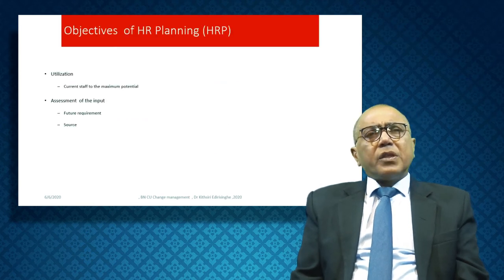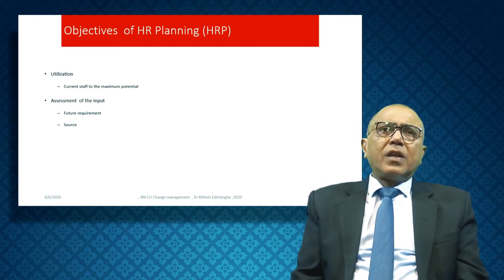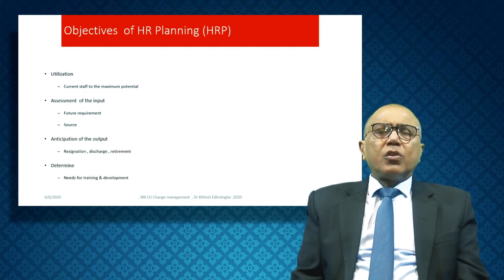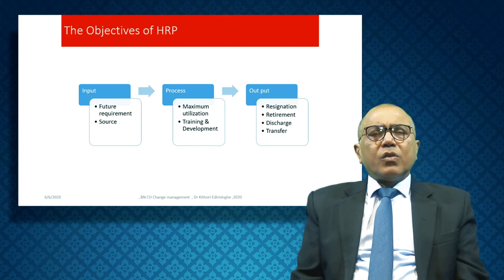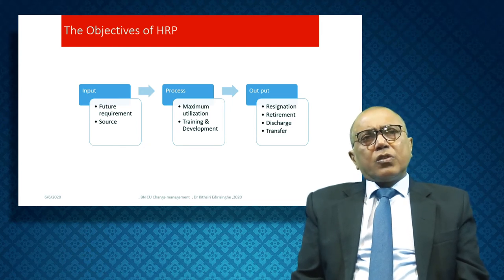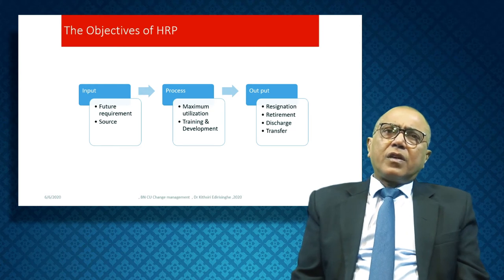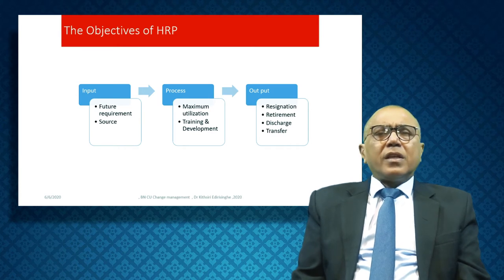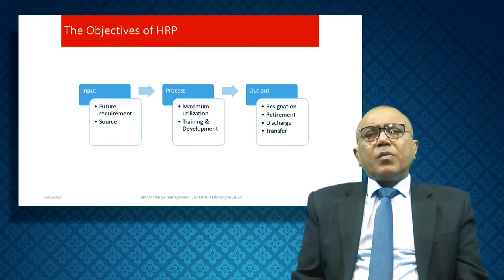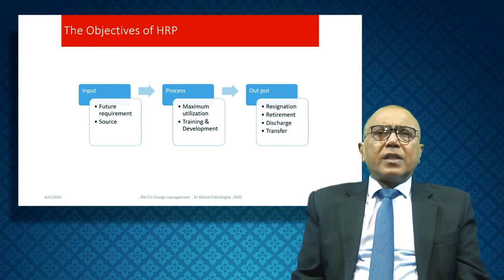The objectives of general human resource planning are to utilize them well, assess the input, and anticipate the output. The human resource process: you forecast the future requirements, look at where you can get them, make maximum use of human resources, and then training and development. There will be resignation, retirement, discharge, and transfer — you have to really look at this.